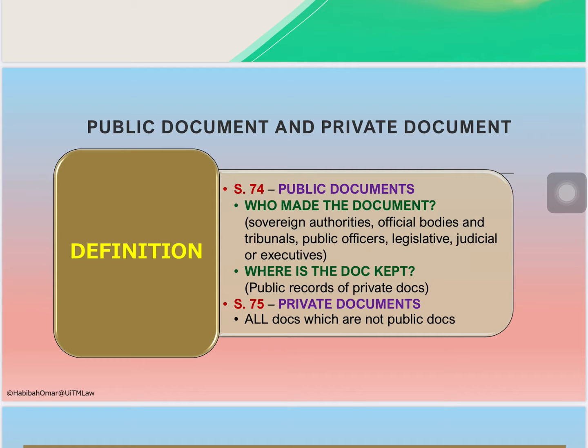Section 74 of the Evidence Act states that the following are public documents: (a) documents forming the acts or records of the acts of (1) the sovereign authority, (2) official bodies and tribunals, and (3) public officers — legislative, judicial, and executive — whether federal or state, or of any other part of the Commonwealth or of a foreign country; and (b) public records kept in Malaysia of private documents.